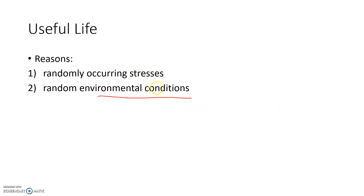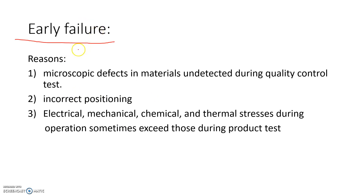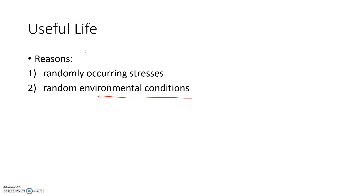For example, suppose a bulb is working perfectly for two or three months. Then, while you are using it in the bathroom, some water droplets contact the hot bulb and the glass may break due to uneven thermal expansion. These are random environmental conditions. The failure rate is not zero in this region, but it is much lower compared to the early failure rate.